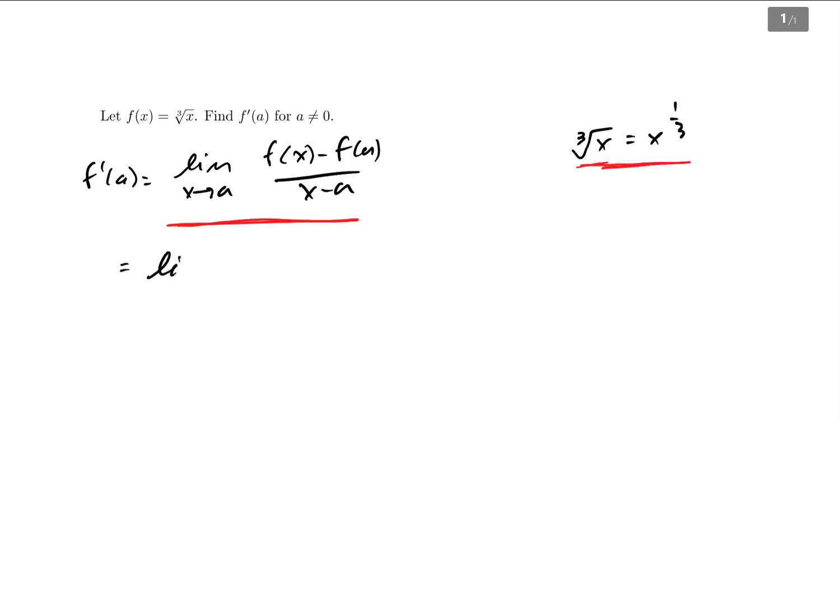So that would look like limit as x approaches a, x to the one third power minus a to the one third power over x minus a. It's not clear how to simplify this. If you plug in a, you get zero over zero. But how do you do the algebra here? A simple conjugate will not take care of this problem.